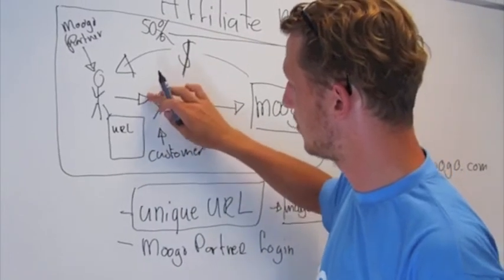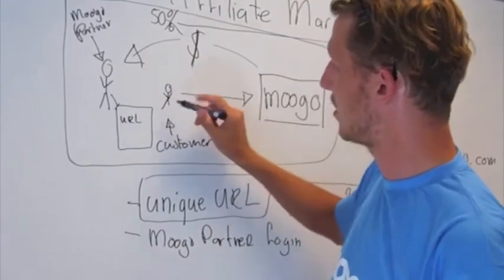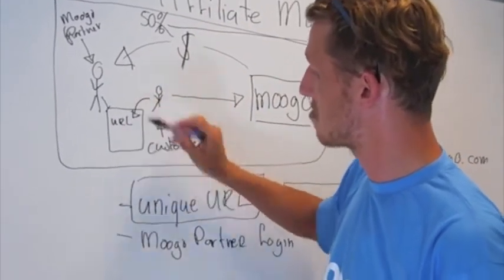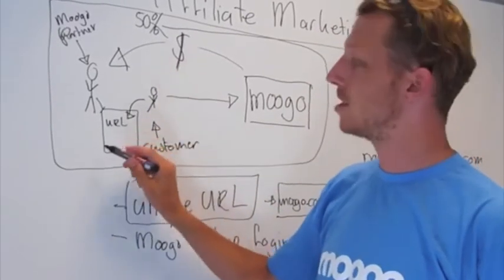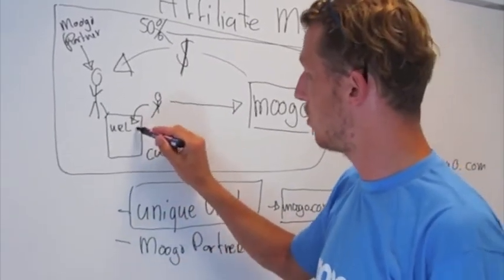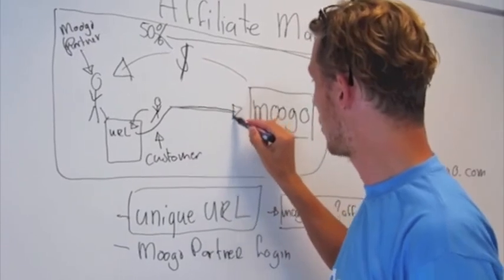Then a visitor of your site, let's say this little guy here, goes to your site, reads your blog post, clicks on the URL and will be directed to the Mugro.com site.